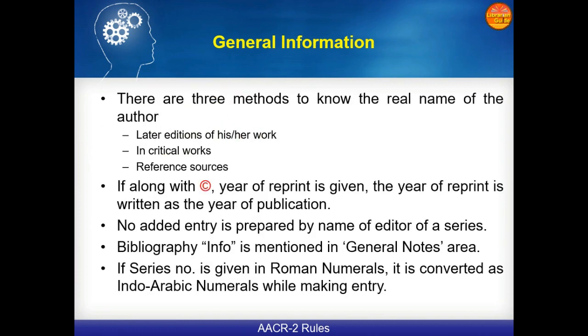There are three methods to know the real name of the author: later editions of their work, critical works, or reference sources. If the copyright symbol is given along with the year, the year of reprint is written as the year of publication — this is most important. No added entry is prepared for the name of the editor of a series. Bibliography information is mentioned in the general note area.